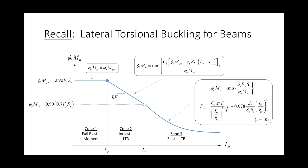For beams, there's a little bit more going on, but the process is somewhat similar. We have an unbraced segment of the beam, and we compare that against our two anchor points to figure out what zone we're in. That zone tells us how to compute the capacity. We have three zones for beams: either a full plastic zone, an inelastic LTB zone, or an elastic LTB zone, and we have expressions to compute them — very plug and chug, very straightforward.